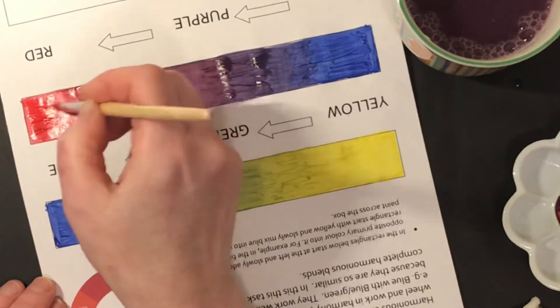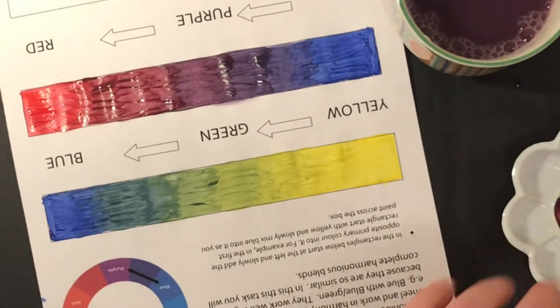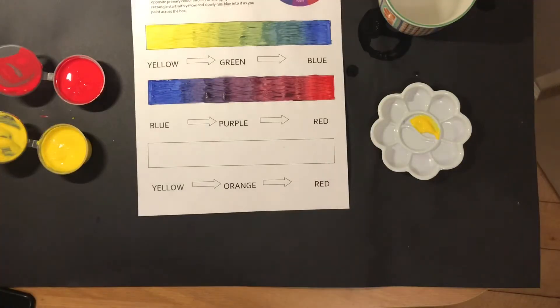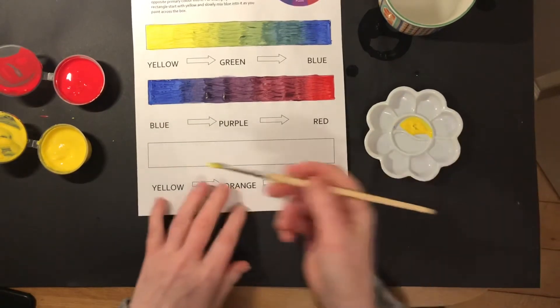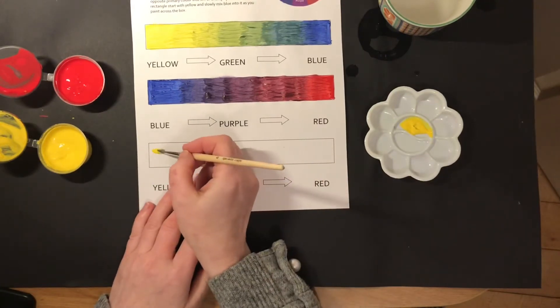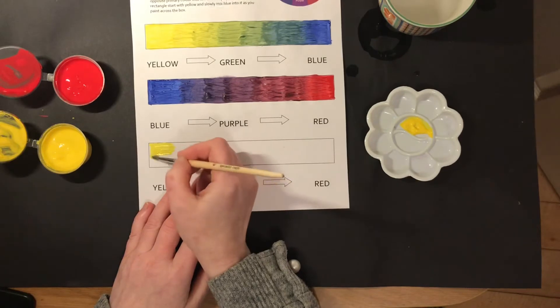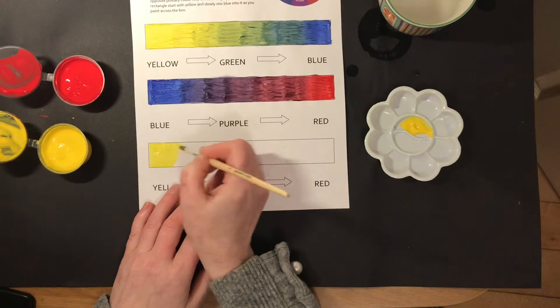Again make sure to wash your tray or wash your plate and to get fresh water. The last strip is going to start with yellow and it's going to move through yellow, yellow-orange, orange, red-orange through to red. So again add a few centimeters of the yellow just to start with.